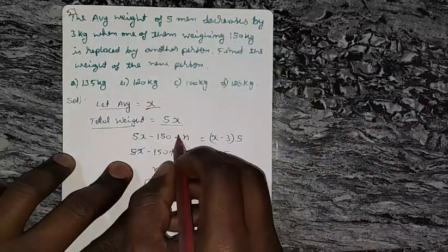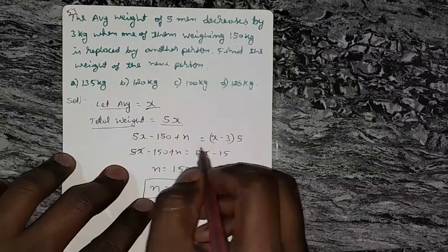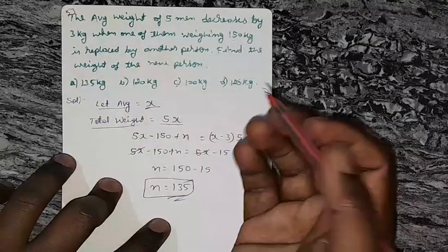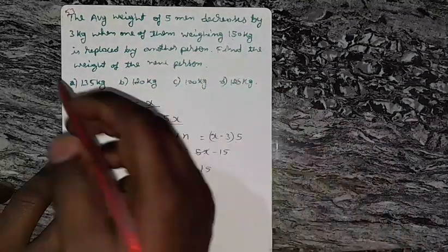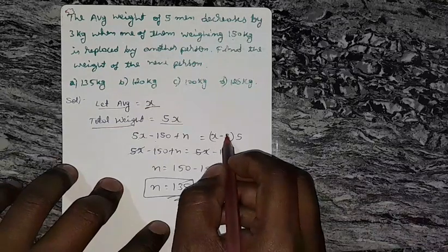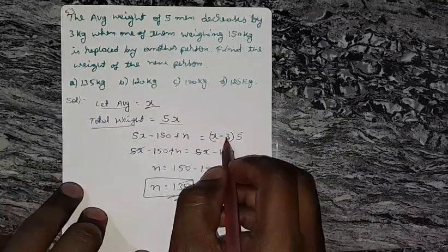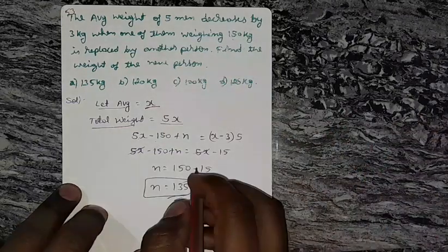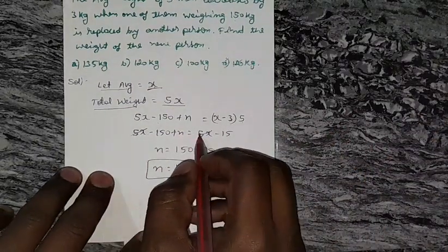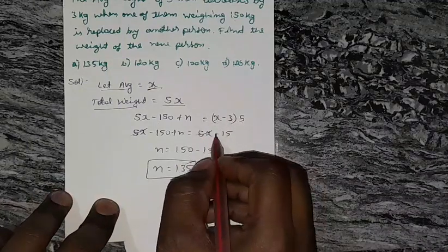Let n be the new person's weight. The equation is 5x minus 150 plus n equals (x minus 3) times 5. Here x minus 3 means the average decreases by 3 kg, so the new average is x minus 3 times 5, which equals 5x minus 15.